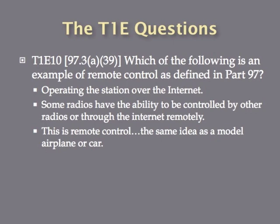Which of the following is an example of remote control as defined in Part 97? The answer is operating the station over the internet. There are a few types of station control: Automatic Control, which is safeguards for stations that operate on a 24/7 basis like repeaters, digipeaters, and beacon stations; local control, for when you are physically at the control point; and remote control. Some radios have the ability to be controlled through the internet or other radios. When you manipulate the controls of a transceiver from a remote location through another device, that is called remote control.